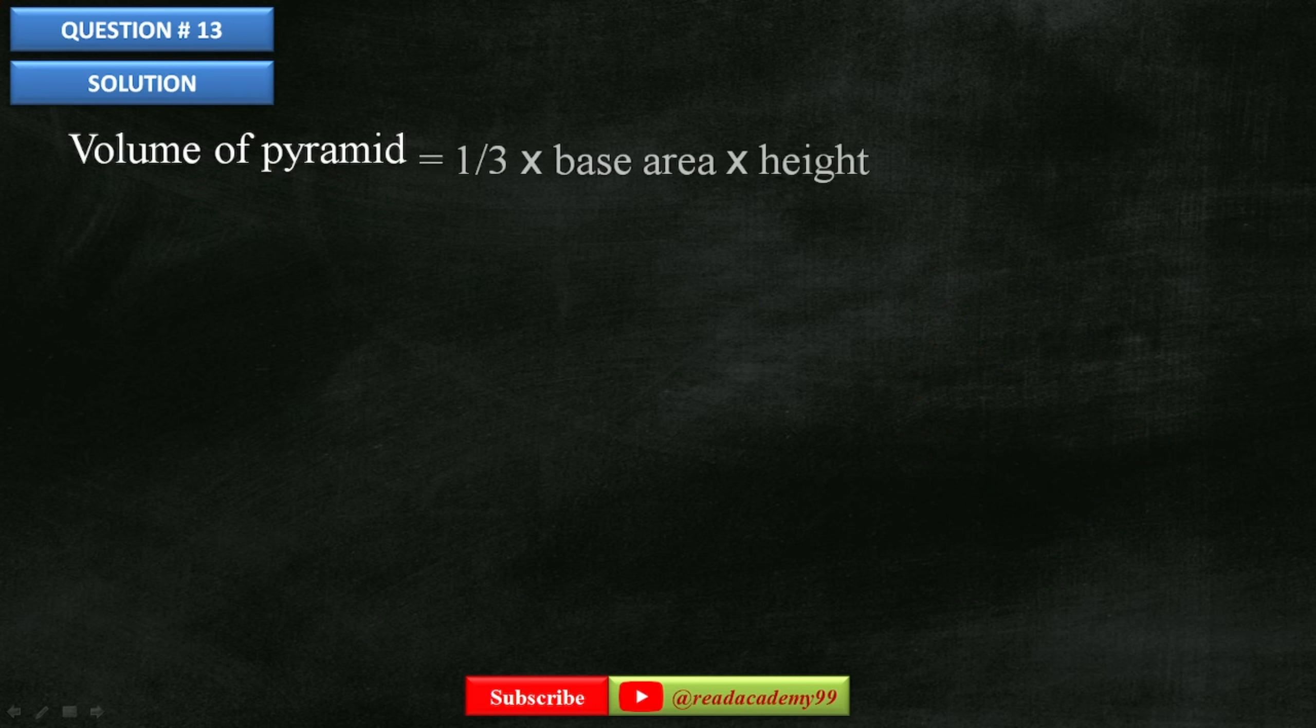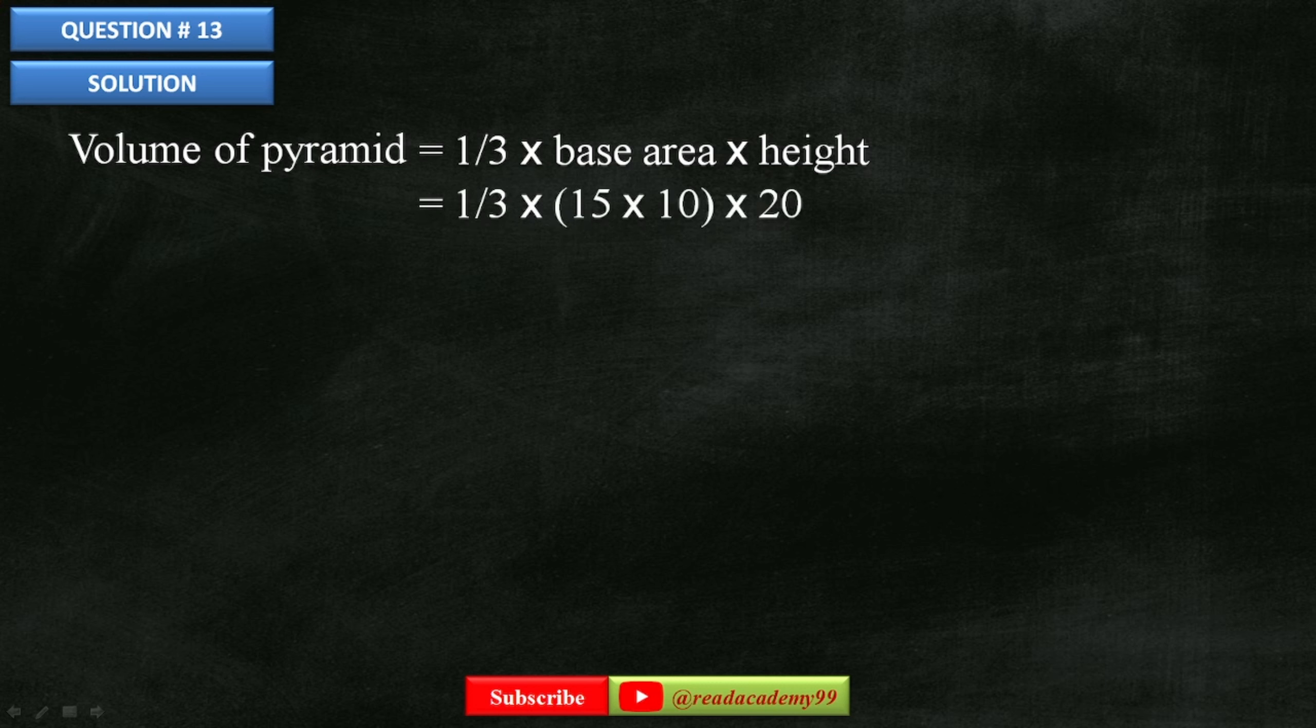1/3 times base area times height, which is equal to 1/3 times 15 times 10 times 20. So the volume of the pyramid is 1000 cm³.